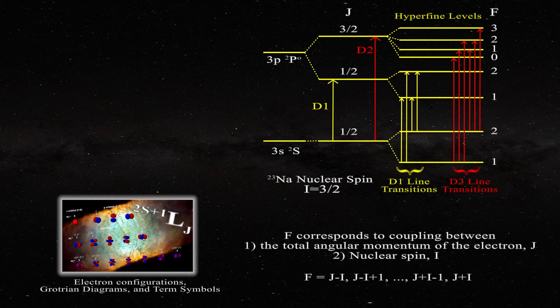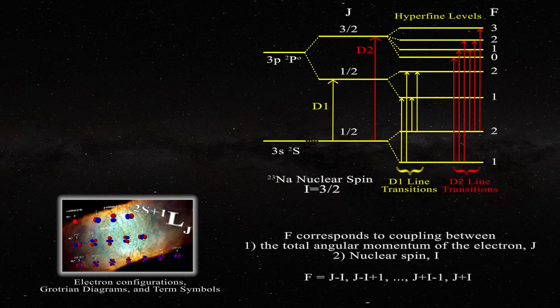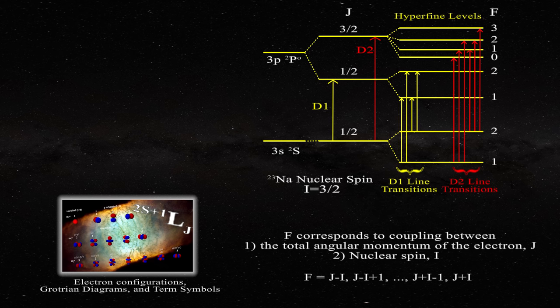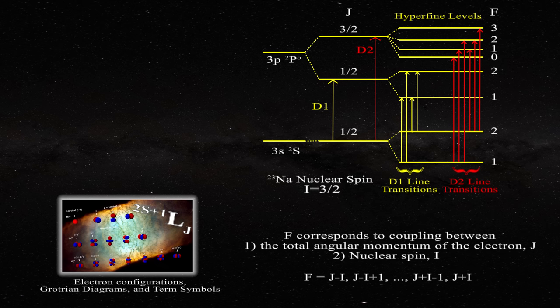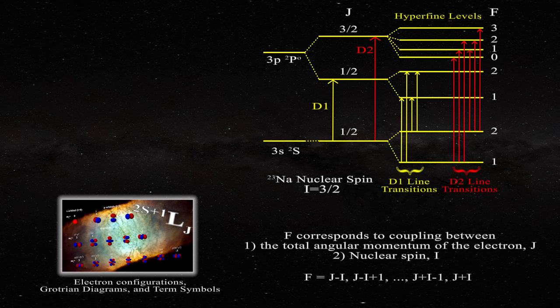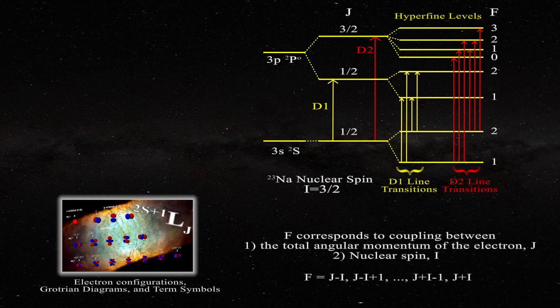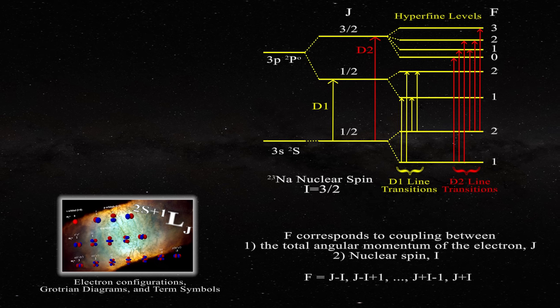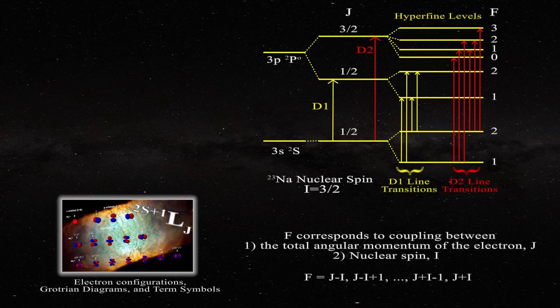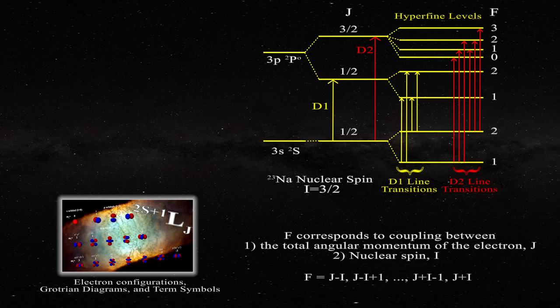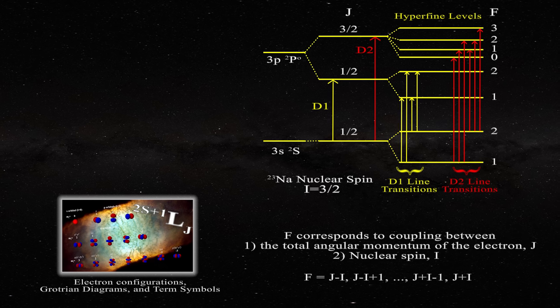For the D1 line transitions are occurring between total angular momentum quantum numbers for the atom of F equal one or F equal two which are splitting the two J equal one half levels as can be seen here in yellow. The hyperfine transitions for the D2 line are occurring between hyperfine transitions based on a J equal one half lower energy state and a J equal three half higher energy state as displayed in red. Scientists have tried to utilize hyperfine splitting to account for the polarization of the sodium D1 line with limited success.